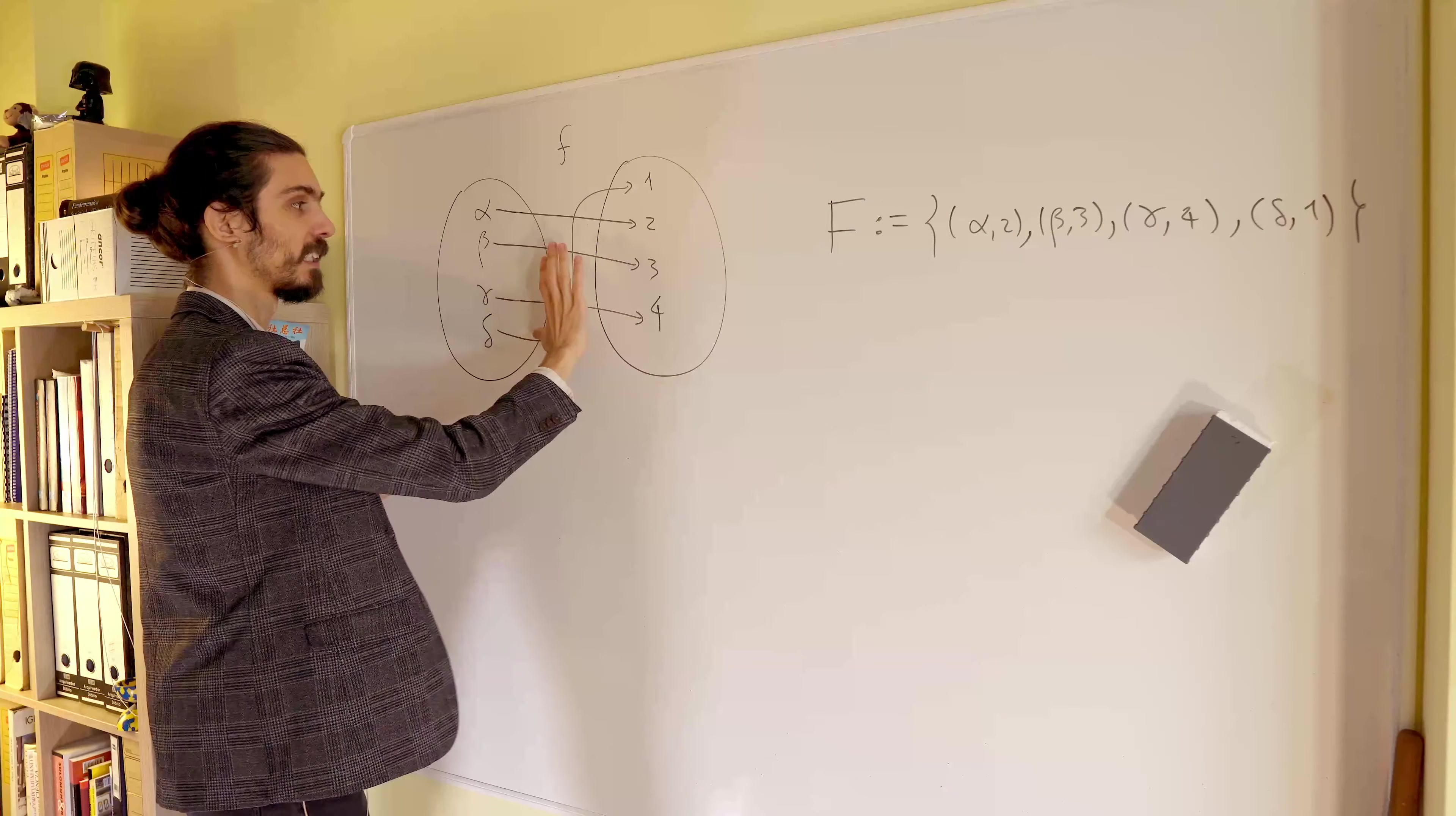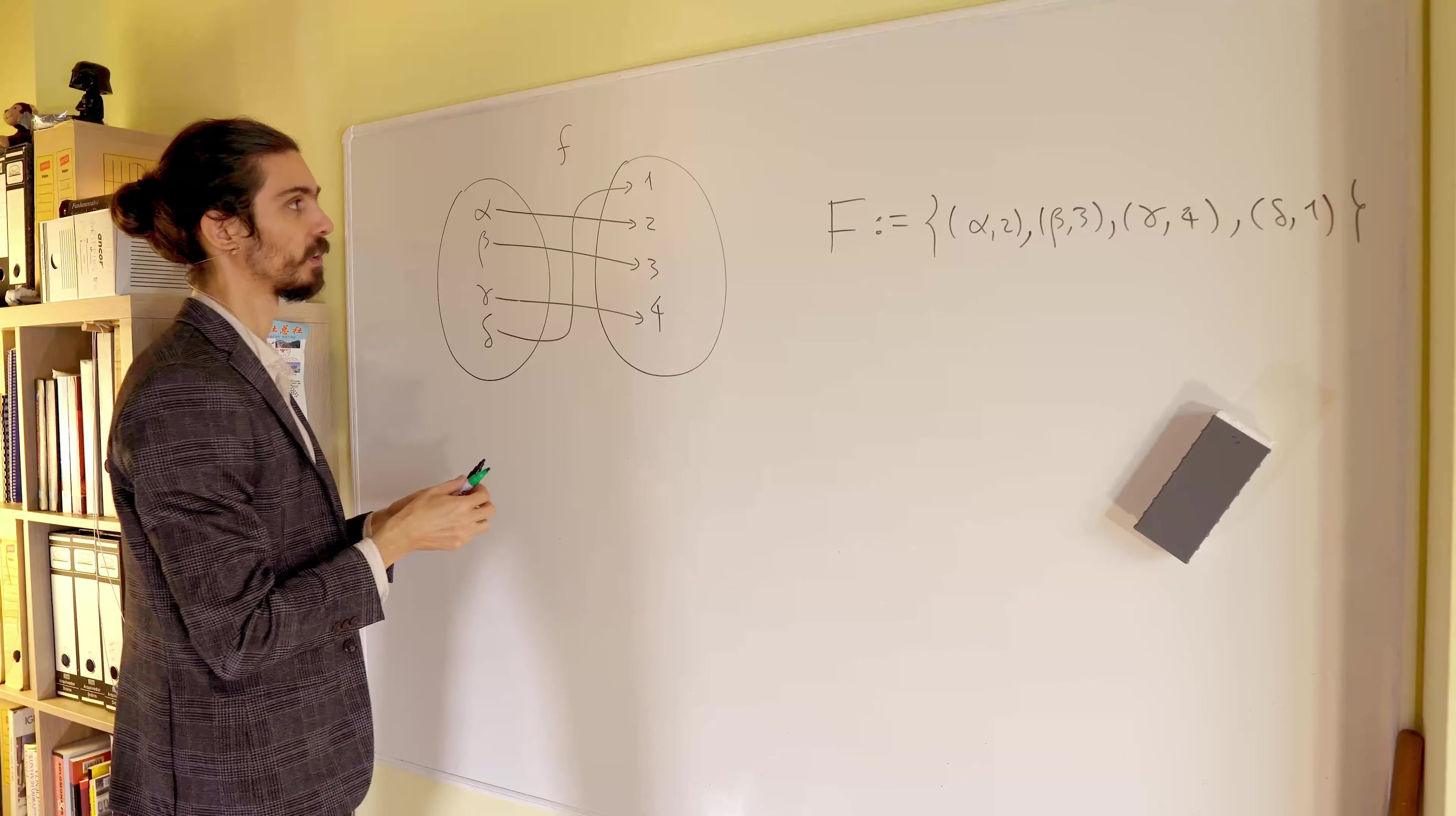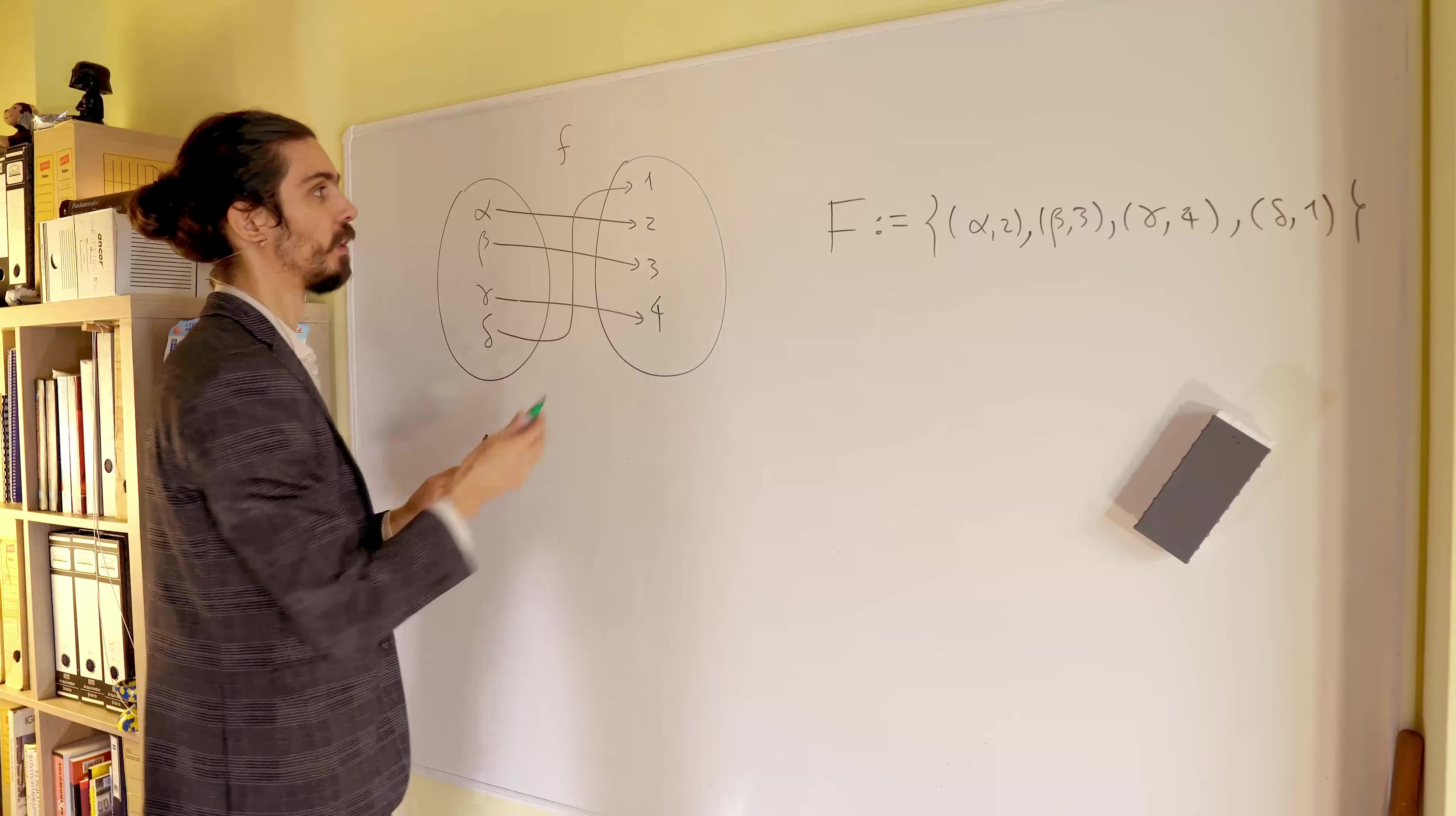And for that, let's just flip the arrows. So this one is assigned now to this one. This one now is assigned to this one. The 3 is assigned to beta. And 4 is assigned to delta. And now let's define these new arrows in green as the function g.